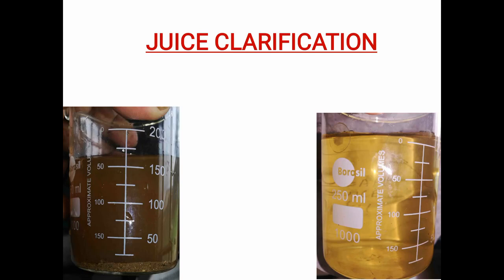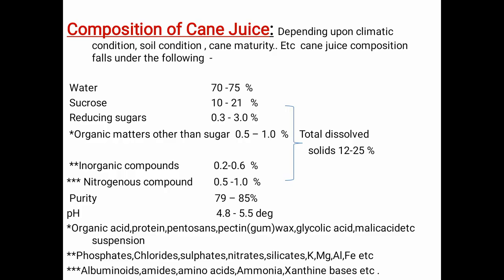Generally, the cane can be divided into three parts: the first one is the leaf, that is the top portion; the second one is the tops; and the last one is the stalk. Based on different climatic conditions, soil conditions, and maturity, the sugarcane composition falls under the following ranges.